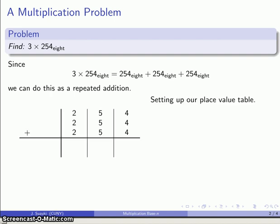So we'll set up our addition using our place value table. And again, as long as I stay within the columns, I can add normally. So I'll add these numbers in the first column. 2 plus 2 plus 2 is going to give me 6. 5 plus 5 plus 5 is going to give me something I can write down as 15. 4 plus 4 plus 4 will give me something I'll write down as 12.